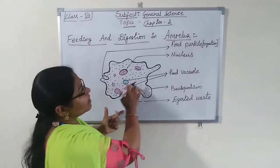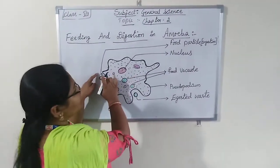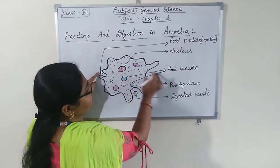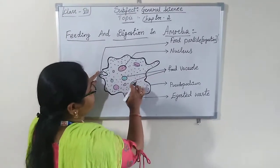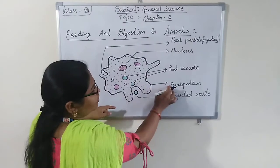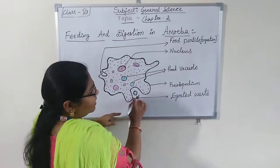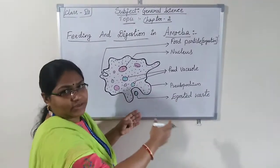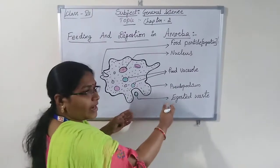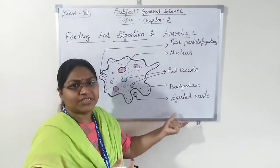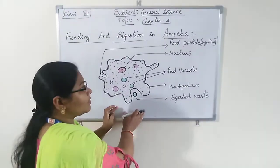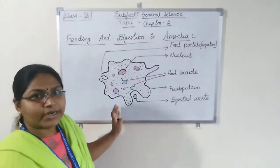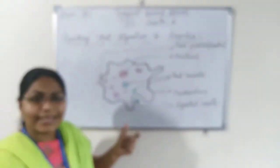This is the amoeba structure. The parts are: this is the food particle, this is the nucleus, these are the food vacuoles, this is the pseudopodium, and this is the undigested waste — the unwanted, undigested residue. So this is the diagram of amoeba and there are its parts.